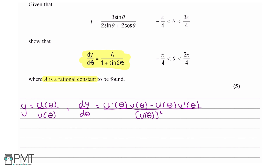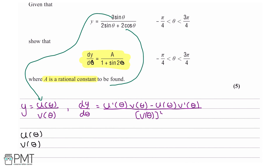The first thing I'm going to do is assign u(θ) and v(θ) from our question. So u(θ) is our numerator, which is 3 sine theta, and v(θ) is our denominator, which is 2 sine theta plus 2 cosine theta. Let's write these down: u(θ) = 3 sin θ, v(θ) = 2 sin θ + 2 cos θ.